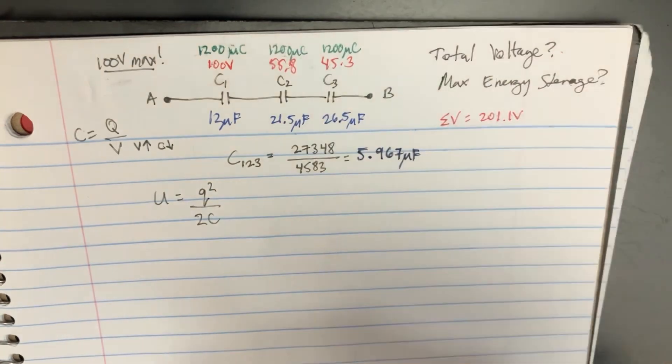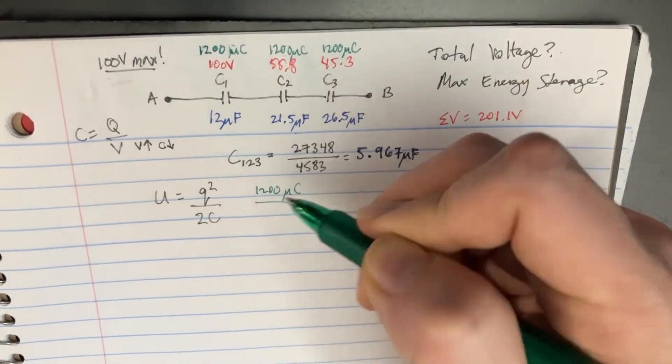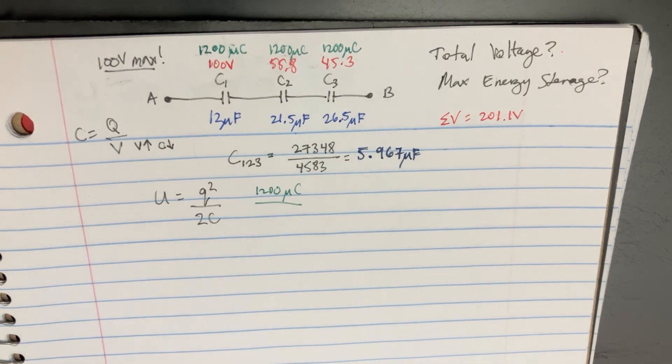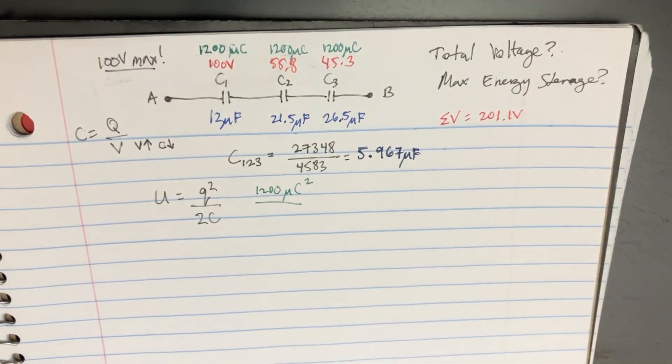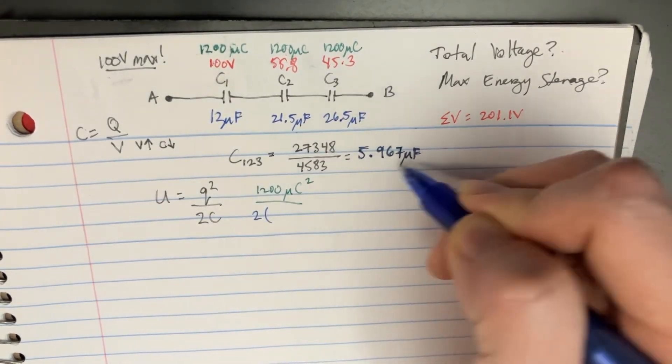And we're just going to use the charge, which we have right here. It's 1,200 microcoulombs. And we're going to divide that, or square it first. But we're going to divide that by 2C, which is going to be 2 times this C, which is 5.967 microfarads.